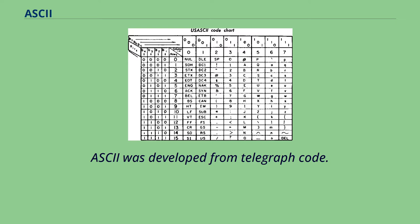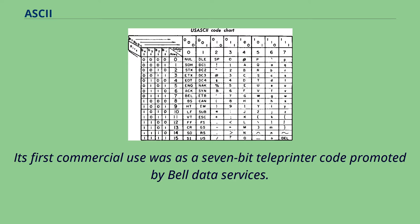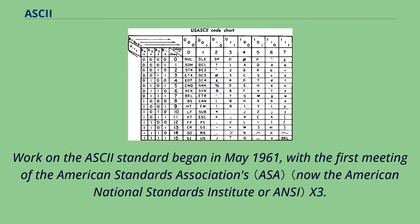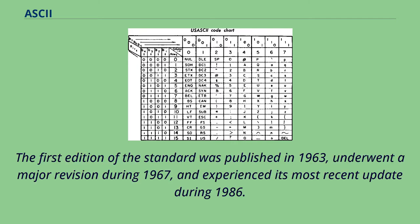ASCII was developed from telegraph code. Its first commercial use was as a 7-bit teleprinter code promoted by Bell Data Services. Work on the ASCII standard began in May 1961, with the first meeting of the American Standards Association's X3.2 subcommittee. The first edition of the standard was published in 1963, underwent a major revision during 1967, and experienced its most recent update during 1986.